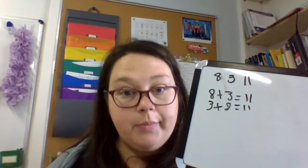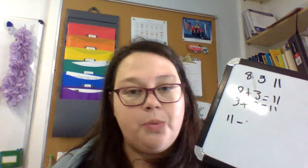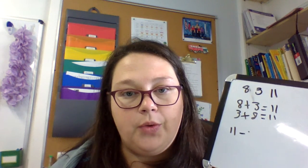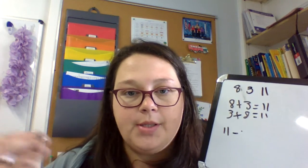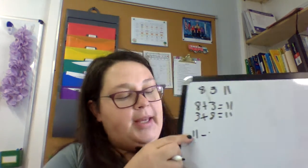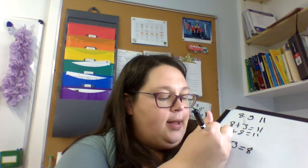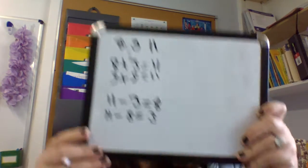Now, in a subtraction problem, you're always going to subtract from the biggest number. Unless you're working in negative numbers, which we don't do in second grade, the biggest number is always going to be first. So 11 subtract 3 equals 8, and 11 subtract 8 equals 3. And that's a fact family.